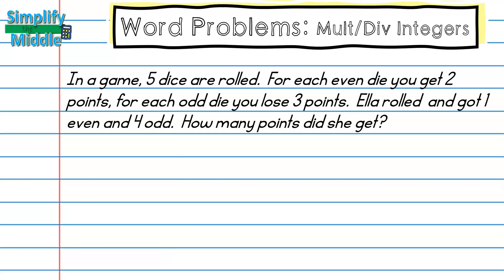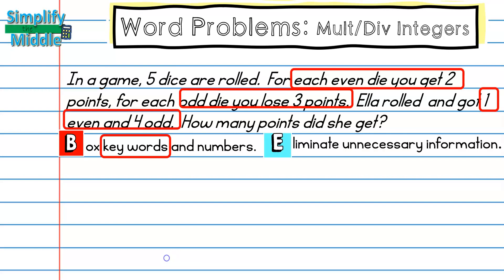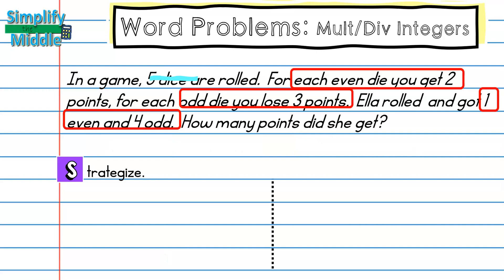The next example deals with a game. In the game, five dice are rolled. For each even die you get two points; for each odd die you lose three points. Ella rolled and got one even and four odd — how many points did she get? I'll box my keywords: for even die you get two points, for odd you lose three points, one even and four odd. I'll eliminate unnecessary information — I don't need to know five dice were rolled, since I can see she ended up with one even and four odd.